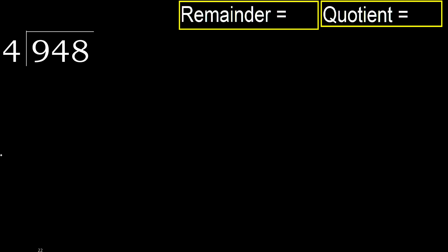948 divided by 4. 9 is not less, therefore start with 9. 4 multiplied by which number is nearest to 9 but not greater? 4 multiplied by 3 is 12, which is greater. Multiply by 2 is 8, which is not greater. Subtract: 9 minus 8 is 1.